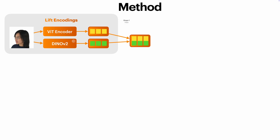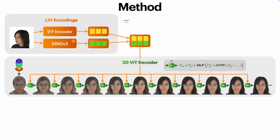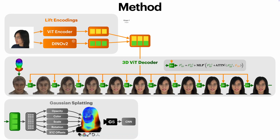These 2D features are then lifted into 3D space using a transformer-based 3D decoder. The decoder is initialized with an upsampled FLAME template. Through multiple layers of cross-attention, it progressively retrieves information from the 2D features to refine the 3D geometry and appearance. To render the final 3D head, we employ Gaussian splatting, followed by a shallow two-layer CNN that sharpens the resulting image and suppresses artifacts.